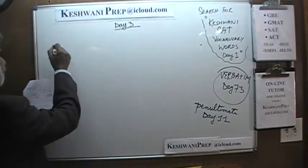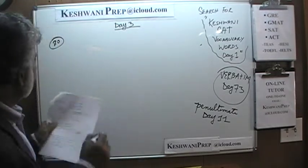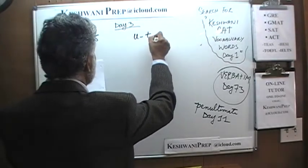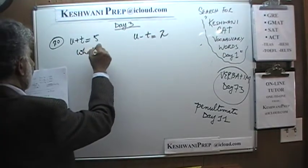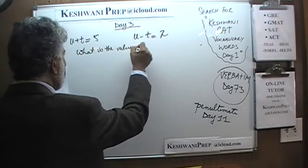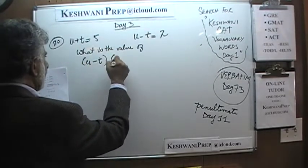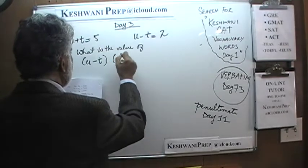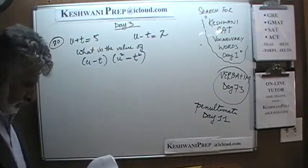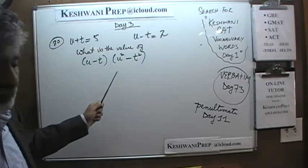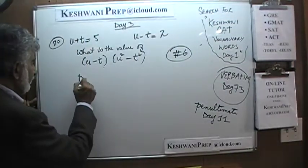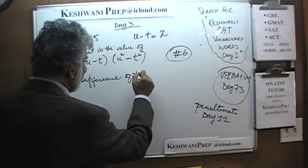Number 20 — the very last one. It says u plus t equals 5, and u minus t equals 2. The question is: what is the value of u minus t times u squared minus t squared? What is going on here is the exact same thing we came across in problem number 6 on day 1 — what is known as difference of two squares.